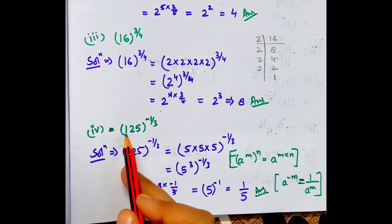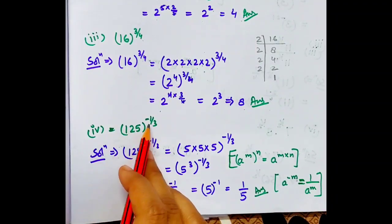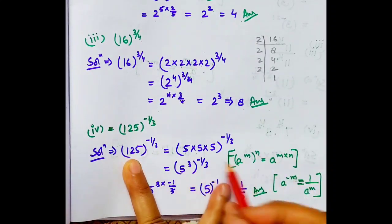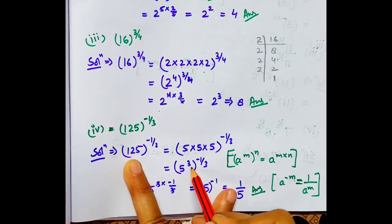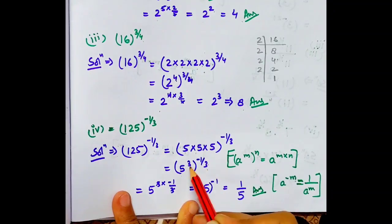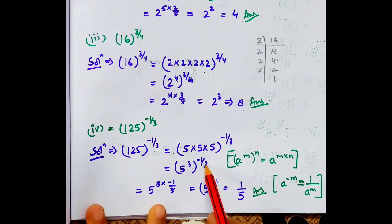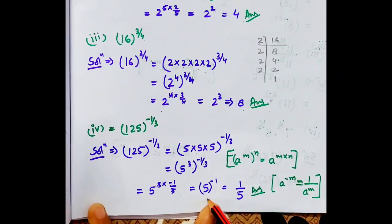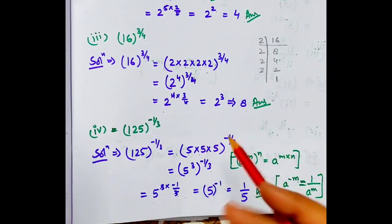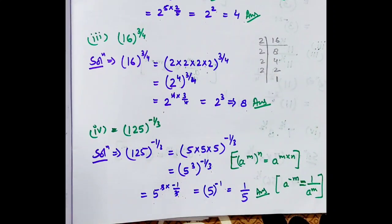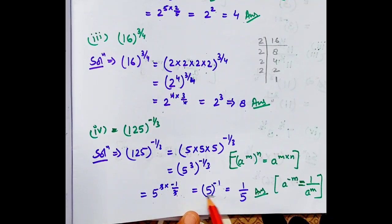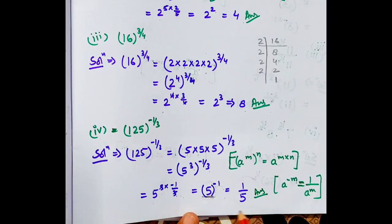Next part, last: 125 to the power minus 1 by 3. Ab yahan pe jo power di hai woh minus mein di. Isko kaise solve karenge? Normally jaise prime factorization karke factors likhte hain, waise factors likhenge. 125 ko hum 5 cube likhte hain, whole to the power minus 1 by 3. Power of power ke form mein, dono powers multiply hongi: 5 to the power 3 into minus 1 by 3. 3 aur 3 cancel ho jayega, hume milega 5 to the power minus 1. Agar kisi bhi number ki power minus 1 hoti hai, to woh denominator mein chala jata hai. Answer hume 1 by 5 milega.